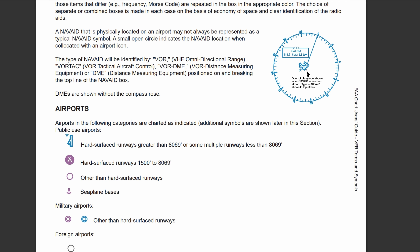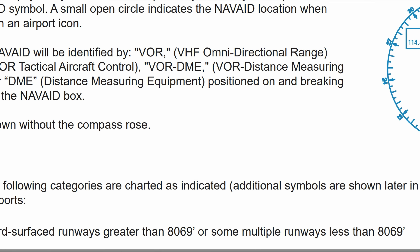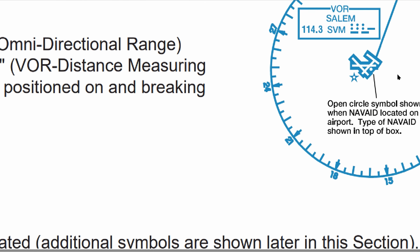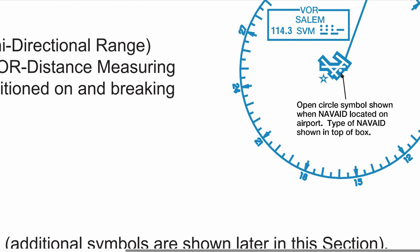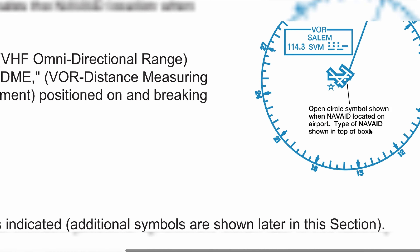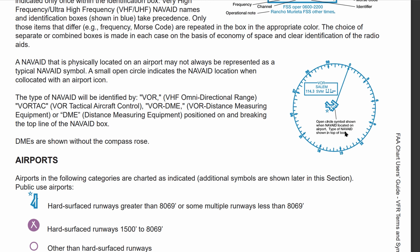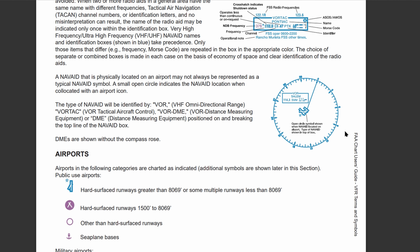In this little box — it's super small, but if you zoom in, you can see that we have an open circle right here next to the airport. So if you take a look at that, we have a little open circle next to the airport, and the open circle is shown whenever there's a navigational aid located at this specific airport.